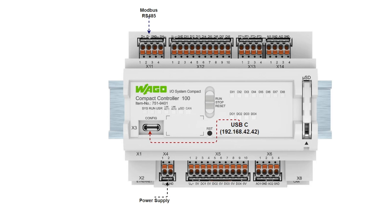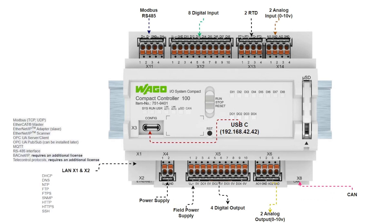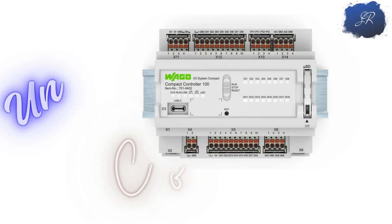It has Modbus RS-485 and 8 digital inputs. Then two RTDs we can configure — this variant doesn't support PT100 but we can configure it as a raw input. There are two analog inputs supporting 0–10V, two analog outputs also 0–10V, and 4 digital outputs with field power supply. CAN protocol is supported at a different port, and we also have Modbus, EtherCAT, Ethernet IP, OPC UA, MQTT, BACnet, telecontrol protocols, and different internet protocols including FTP.